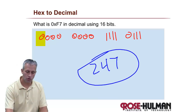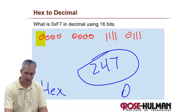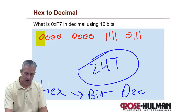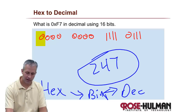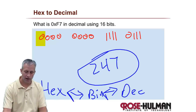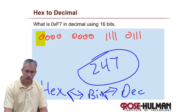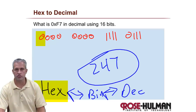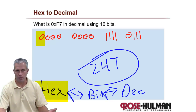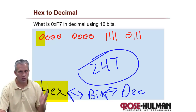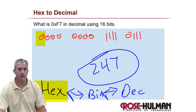So the moral of the story is simple: if you ever want to go from hex to decimal, you have to go via binary if it's a negative. And the same way going back, you have to go via binary. You can hopefully see that hex is really just shorthand binary — and that's the way I think of hex.